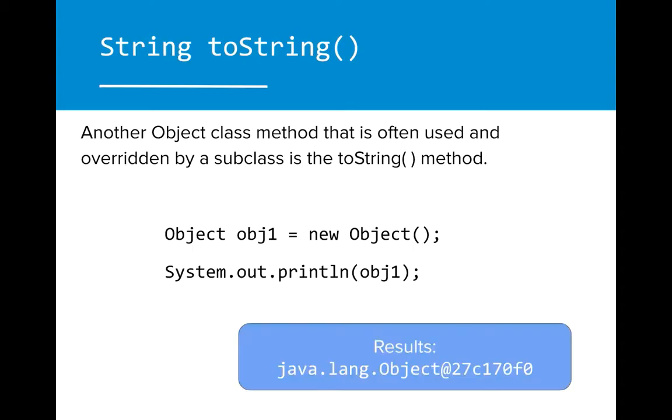The generic toString for an object is to return the object type followed by an at symbol and then the unsigned hexadecimal representation of the object. This has limited value, which is why it is often overridden.